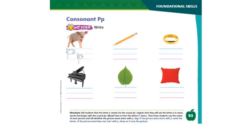Now let's do some writing. We need to look at the pictures and write the letter P under the picture that begins with P. The first one is done for you. This is a picture of a pig. Pig begins with P, so we write the letter P on the lines. Do the same with the rest of the pictures. Take a picture of your work and send it to me, please.